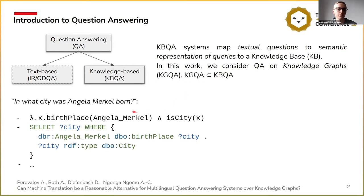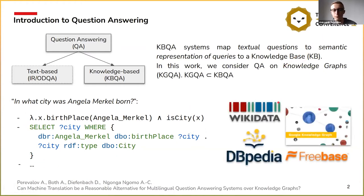Here you can see an example of a simple question: 'In what city was Gila Merkin born?' mapped to a logical query, or to a SPARQL query. And here some of you may know or even work every day with knowledge graphs such as Wikidata, DBpedia, and you may all know Google's knowledge graph.